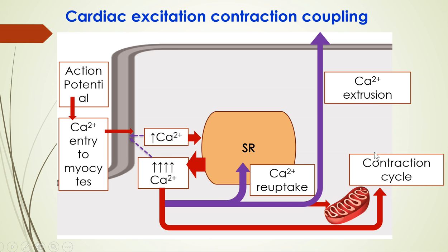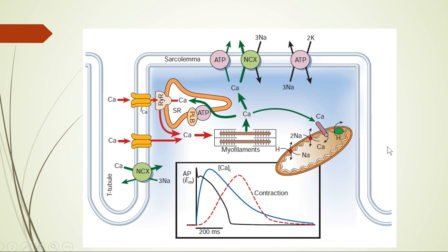In summary: action potential arrival opens the L-type calcium channels. Calcium enters and stimulates ryanodine receptors, responsible for calcium efflux from the SR. That calcium goes to the myofilaments and is responsible for contraction. The same calcium is then taken back into the SR, extruded outside, and taken into mitochondria, so the next cycle can start again. Essentially, action potential leads to increased calcium concentration, which leads to muscle contraction.